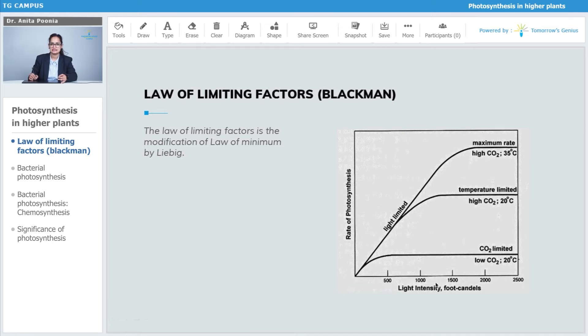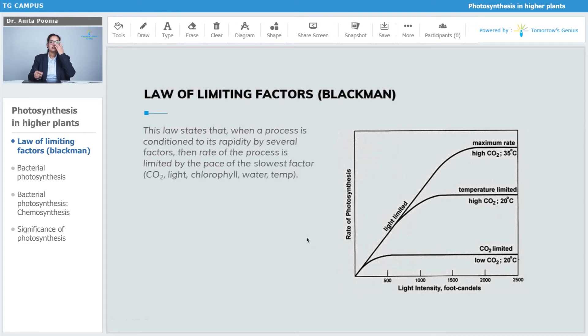Light intensity ranges from 500, 1000, 1500, 2000, 2500 foot candles. You see that here carbon dioxide is limited - low CO2 percentage here, high CO2 percentage here. Temperature limited - this is maximum rate at high CO2, that's 35 degrees Celsius. The light limited...